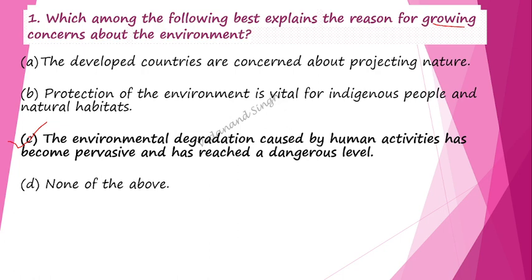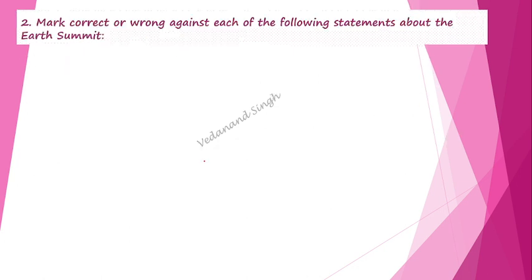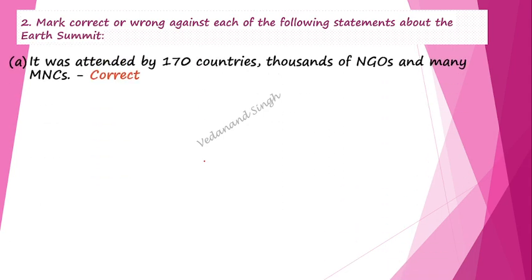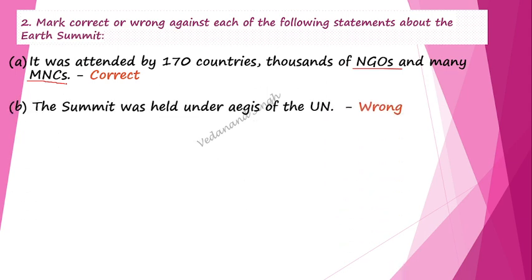Remember Question 1 answer: environmental degradation caused by human activity has become pervasive and reached a dangerous level. For Question 2, we have to identify what is wrong and correct. The first statement is: was the Earth Summit attended by 170 countries and many NGOs? Yes, that is correct — 170 countries and many NGOs attended, along with multinational companies, at the Earth Summit in 1992.